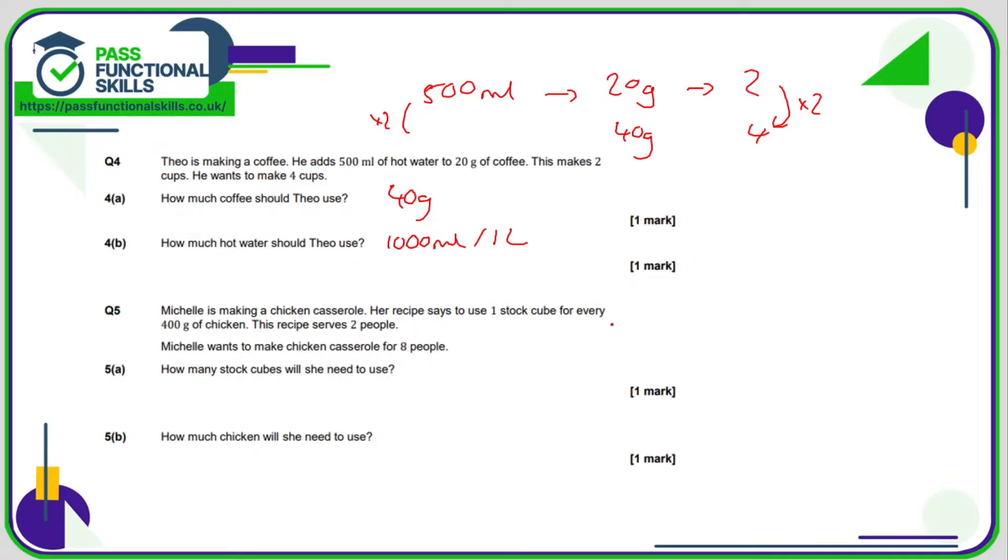Question number five: we're using one stock cube for 400 grams of chicken, and that's for two people. So if Michelle's making chicken casserole for eight people, she needs this recipe four times over. Therefore, she's going to need one times four, which is four stock cubes, and four lots of 400 grams, which is 1600 grams or 1.6 kilos.